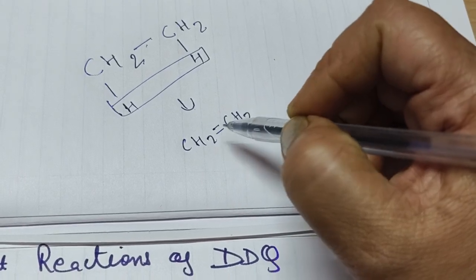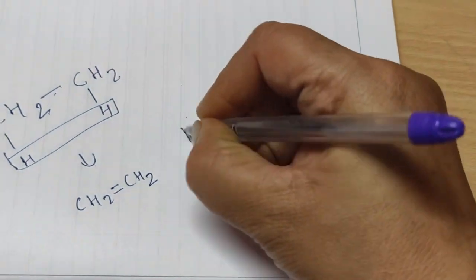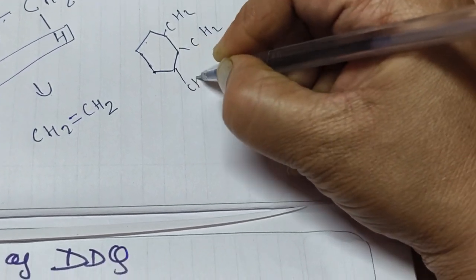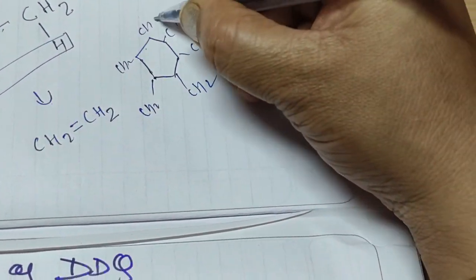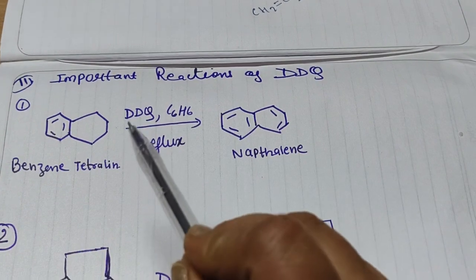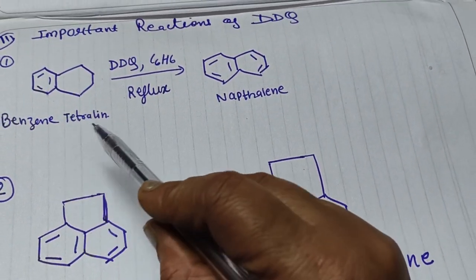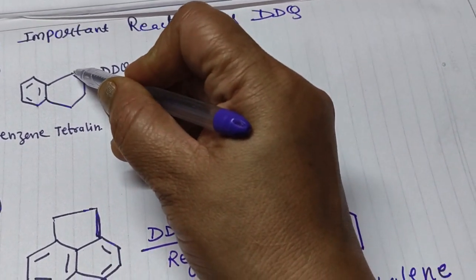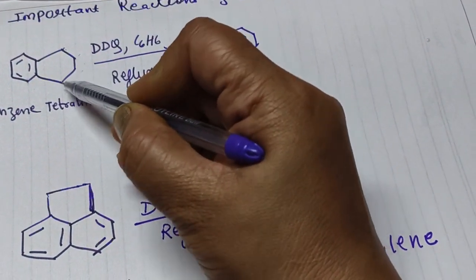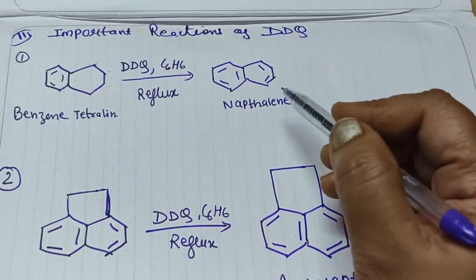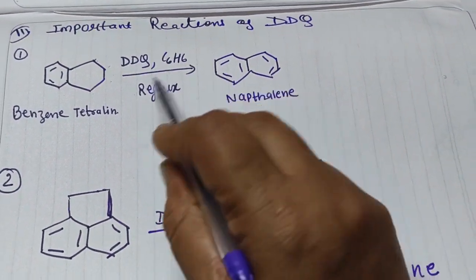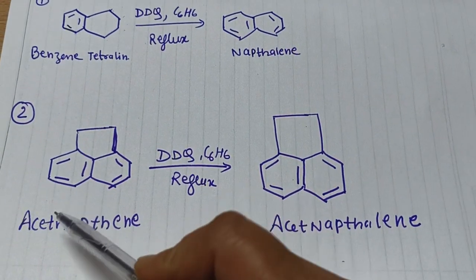For example, in cyclohexane we have CH2 groups all around. If we remove H2, a double bond forms at that position. The first reaction example is the conversion of benzene tetraline to naphthalene. By removing two hydrogens, one double bond forms, and similarly for another CH2 position, giving naphthalene from benzene tetraline using DDQ as reagent in benzene solvent under reflux.